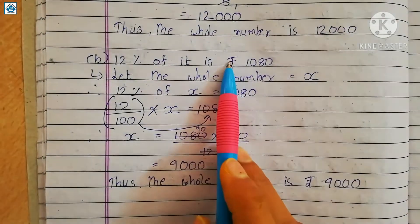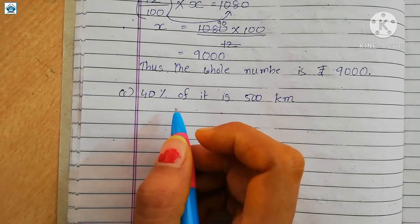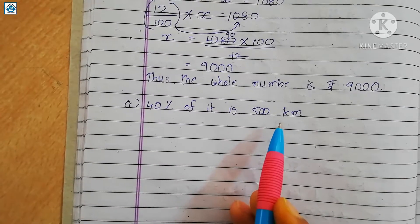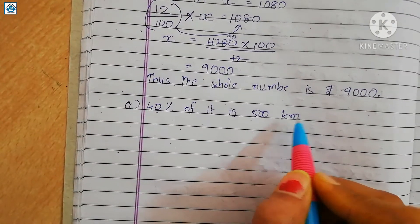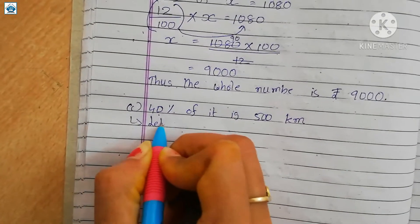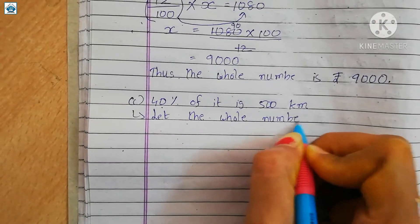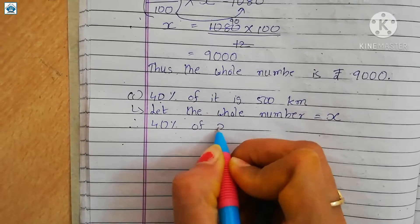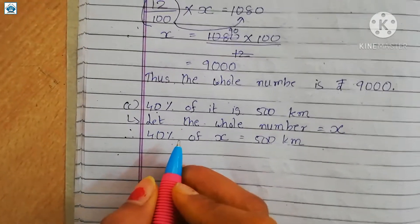Because here the value was given in rupees. Part c is: 40% of it is 500 kilometers. Here again, there is a number whose 40% is 500 kilometers. We have to find that number. So we assume: let the whole number equal x. Therefore, 40% of x equals 500 kilometers.